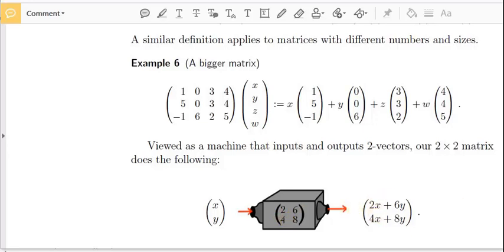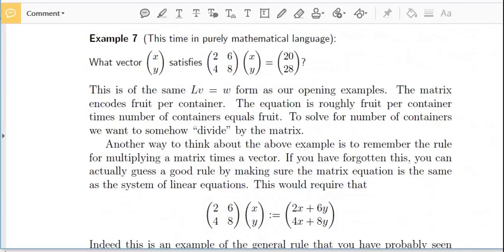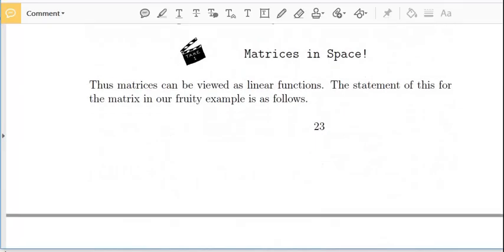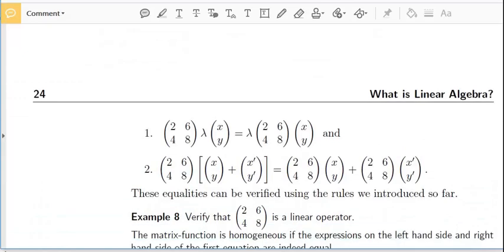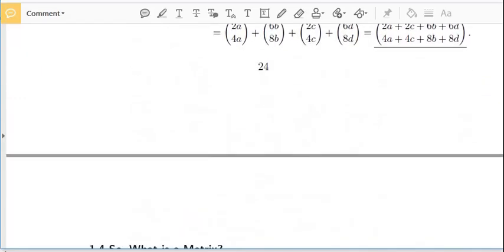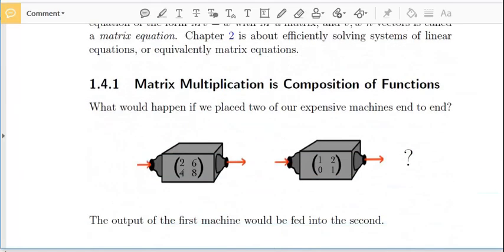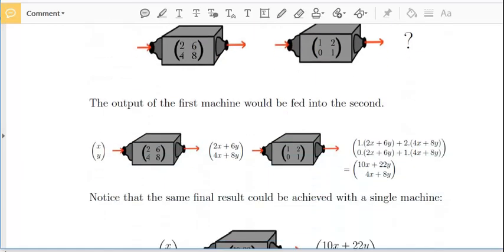So, question. Suppose we put one black box after the other. Suppose we take the output of a black box and feed that into another black box. This is called composition of functions. It means I'm doing one function first and then the other one. Now, what's going to happen? What's the result?